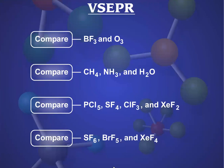Determining the geometry of molecules: the valence-shell electron pair repulsion model, or VSEPR, assumes that repulsions between electron pairs cause them to remain as far apart as possible. The geometry that the molecule ultimately adopts minimizes the repulsion between electron pairs.